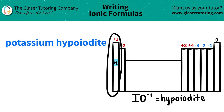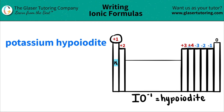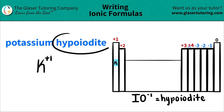All elements in group one, except for hydrogen, are metals, and they all have an ionic charge — or oxidation charge — of positive one. So I'm going to write K as a plus one. Next I see is hypoiodide.